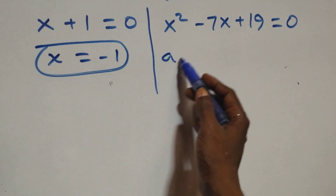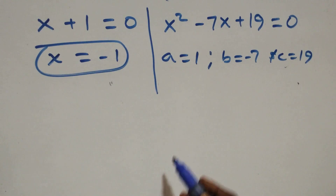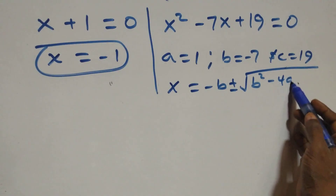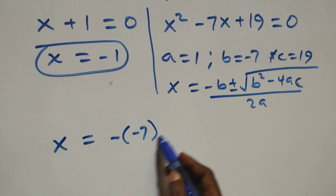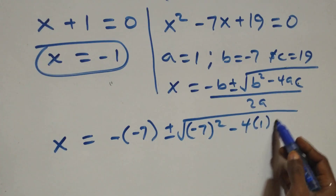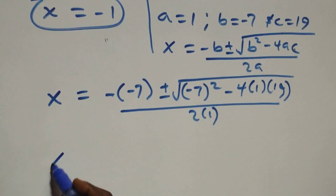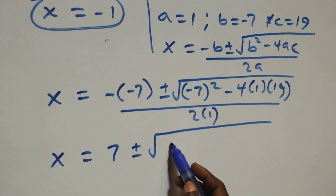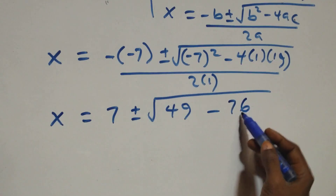For the quadratic, a equals 1, b equals minus 7, and c equals 19. Applying the quadratic formula x equals negative b plus or minus square root of b squared minus 4ac all over 2a, this becomes x equals 7 plus or minus square root of minus 7 squared minus 4 times 1 times 19, all over 2 times 1. That gives: 49 minus 76 equals negative 27, under the square root, over 2.